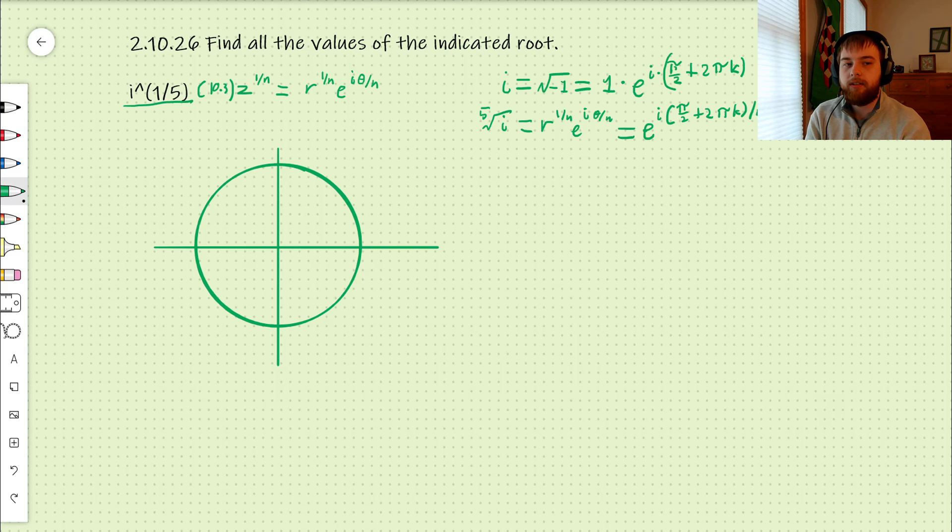So continuing this on underneath here, that leaves us with pi over 10 plus 2 pi over 5 times k. And I'm also going to rewrite this into an easier form for us to deal with: e to the pi i, 1 plus 4k over 10.